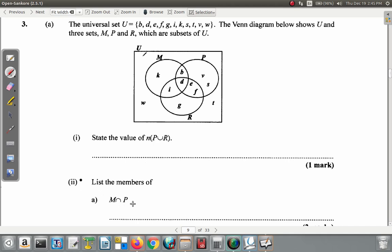When you write a set, you use curly brackets. M intersect P means what is in both M and P at the same time. It doesn't mean M alone or P alone - it must be in both. The area where M and P overlap contains b and d. So the members of M∩P are {b, d}.